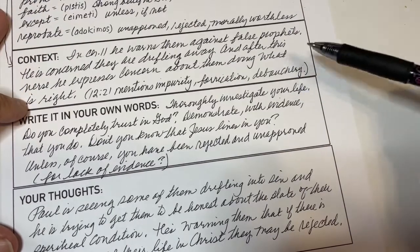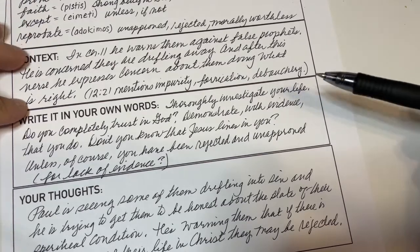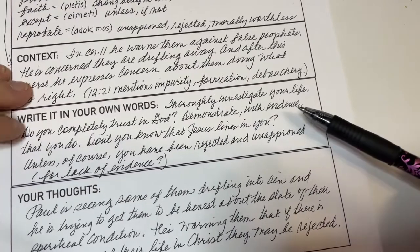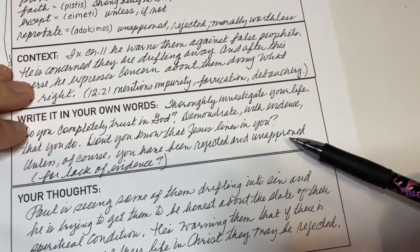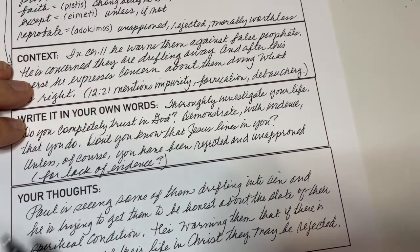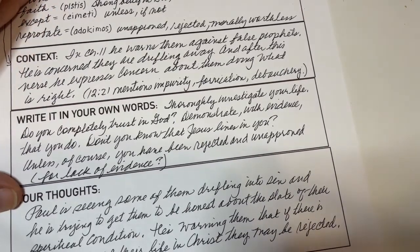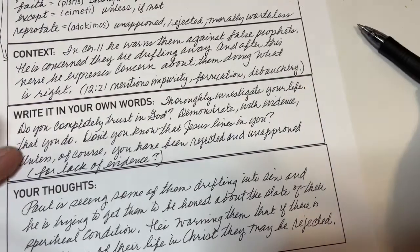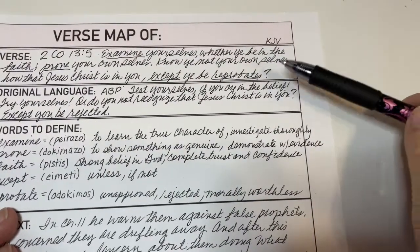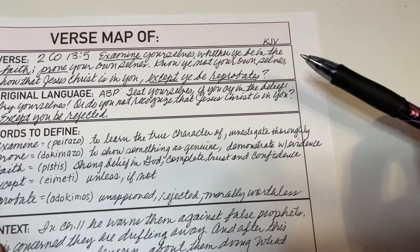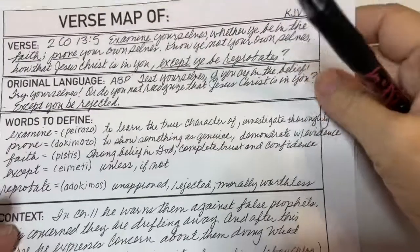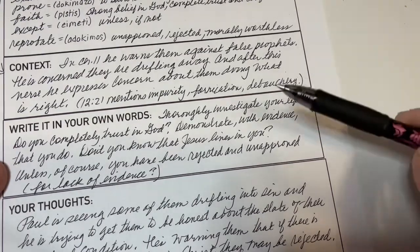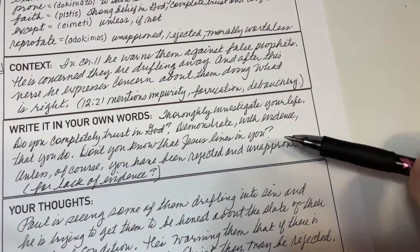Let me read the two side by side. Original: 'Examine yourselves whether you be in the faith. Prove your own selves. Know you not your own selves how that Jesus Christ is in you, except you be reprobate.' Paraphrase: 'Thoroughly investigate your life. Do you completely trust in God? Demonstrate with evidence that you do. Don't you know that Jesus lives in you? Unless, of course, you have been rejected and unapproved — for lack of evidence.' That gave me a much better understanding of what the verse means.